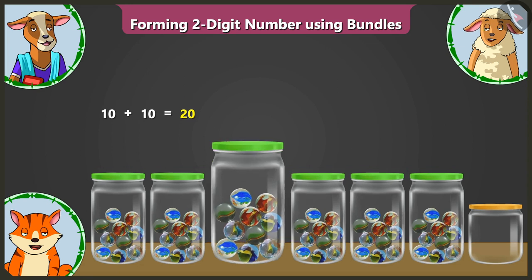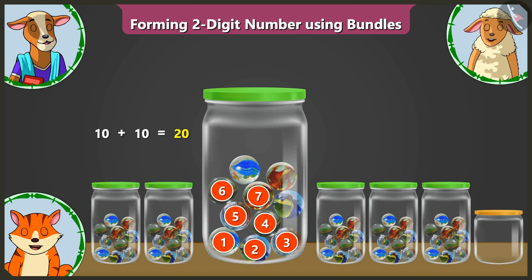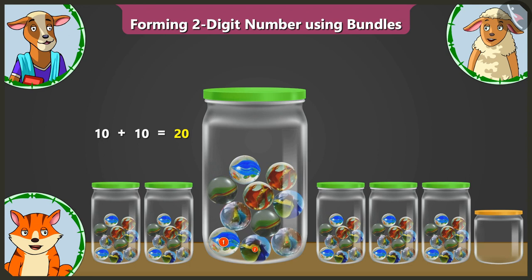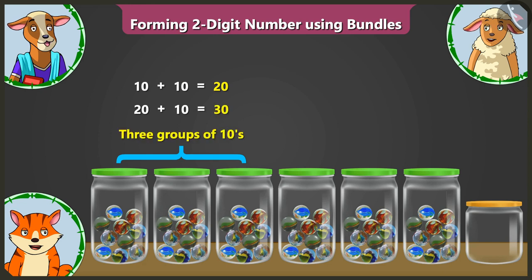Now look, here in the third jar there are 1, 2, 3, 4, 5, 6, 7, 8, 9 and 10 marbles. So this makes it 10 and 10 — 20, and 20 and 10 — 30. Three groups of 10s.